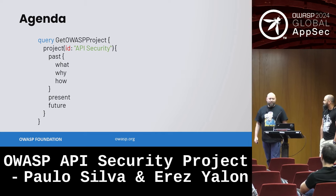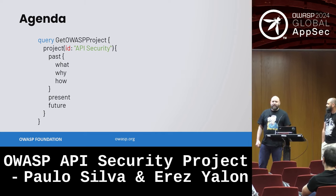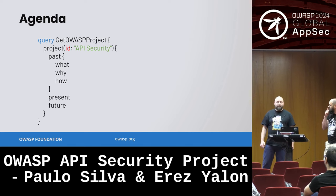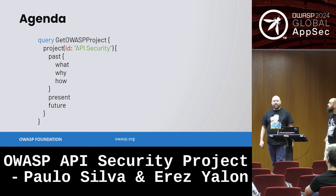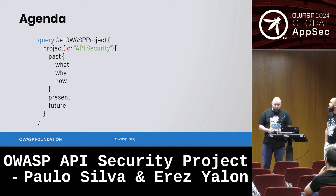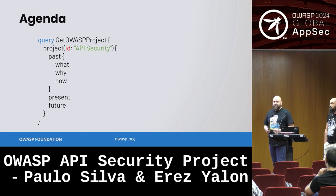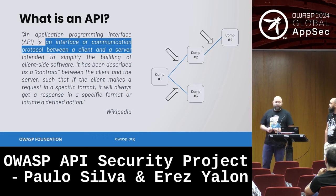Today we're going to talk about three timeframes. We're going to talk about the past — specifically what the project is, why it exists, and how we built it. We're going to talk about the present — what we have at the moment. And hopefully, together with your help, we're going to discuss the future, because we don't have all the answers yet and we need you for that.